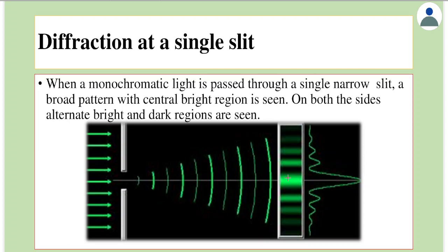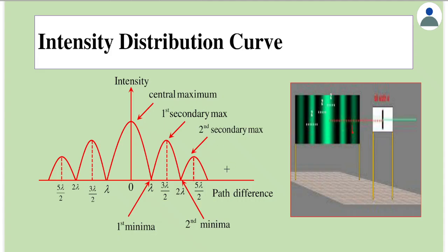On the screen we got alternate bright and dark bands as seen here. Unlike interference, each light band doesn't have the same intensity, and the thickness is varying. So when you plot a graph of intensity versus distance or path difference, we get a graph like this.